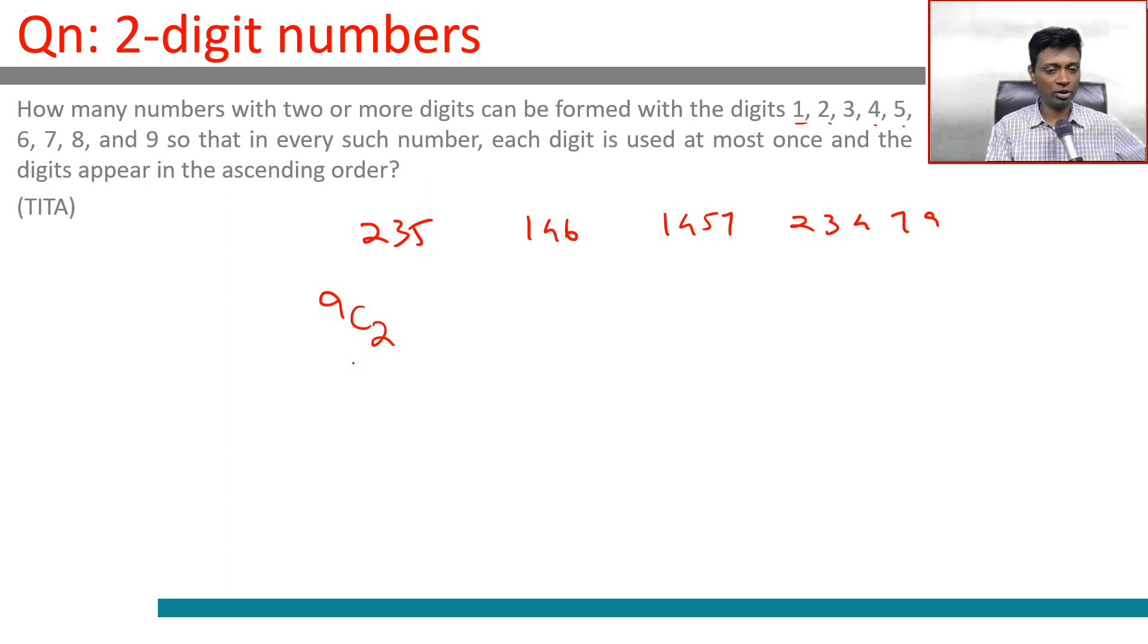So 9C2 is for selecting the two digits. If you want them in ascending order, that is just 9C2. 9C3 for selecting three digits. Any three digits you select, they can be put in ascending order only once.